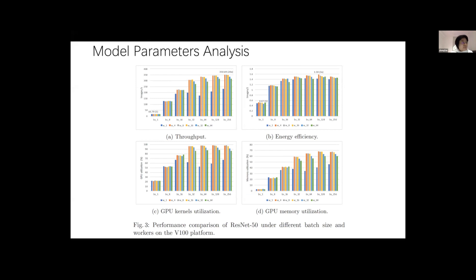And we can see that energy efficiency is less sensitive than throughput to the different model parameters. For throughput, there is a 20 times difference between best and worst performance. However, for energy efficiency, there is only three times difference. This is because the energy consumption mainly consists of number of FLOPs and memory accesses. However, batch size and number of workers do not affect FLOPs and only affect memory access by different data reuse.